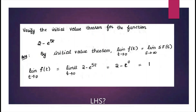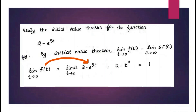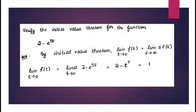LHS is the limit of f(t) as t tends to 0. Since f(t) = 2 − e^(5t), we substitute t = 0. So e^0 is nothing but 1, giving us 2 − 1, and we get the answer as 1.